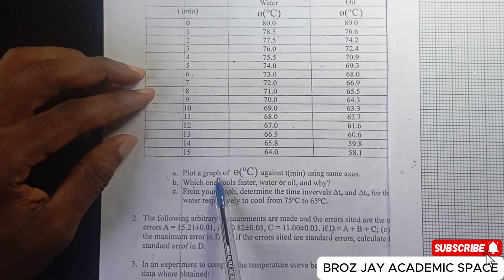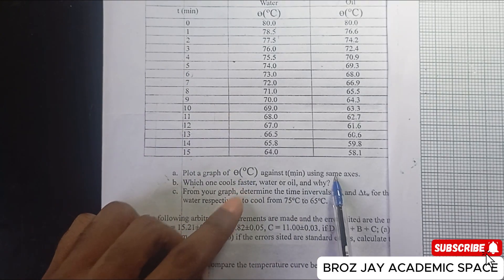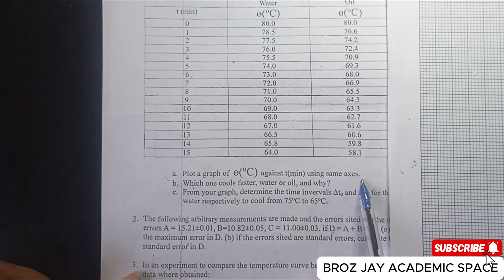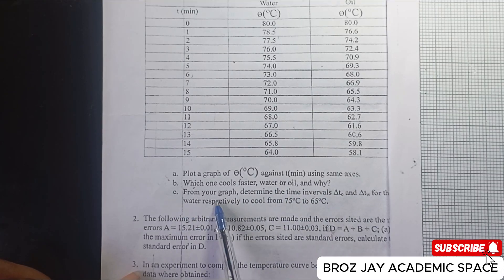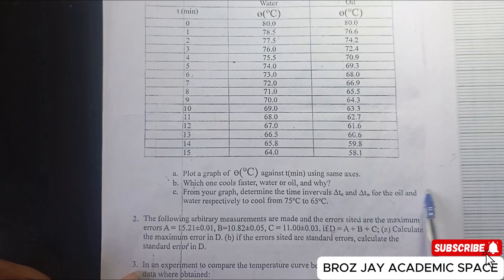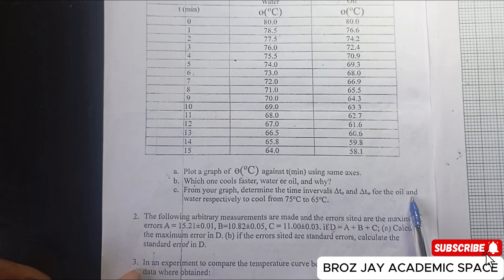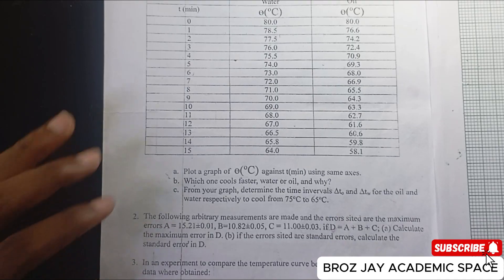Plot a graph of theta in degrees Celsius against time in minutes using the same axis. Which one cools faster — water or oil — and why? From your graph, determine the time interval for oil and water respectively to cool from 75 degrees Celsius to 65 degrees Celsius.